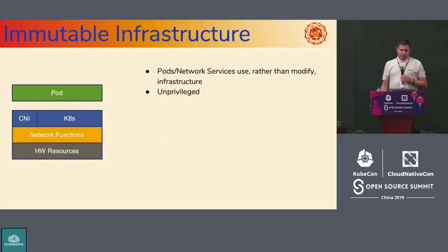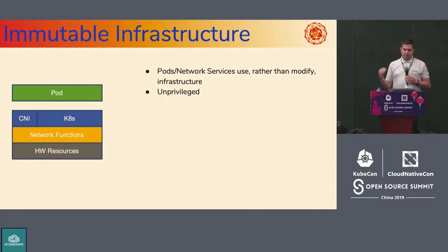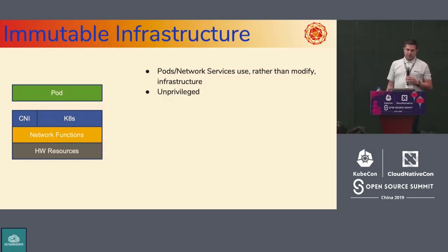From the immutable infrastructure point of view, your pods run at a really high level — you cannot easily change anything particular from the point of view of networking functions, which are abstracted through the Kubernetes and CNI APIs. Your pods really cannot request any specific networking capabilities from the infrastructure.